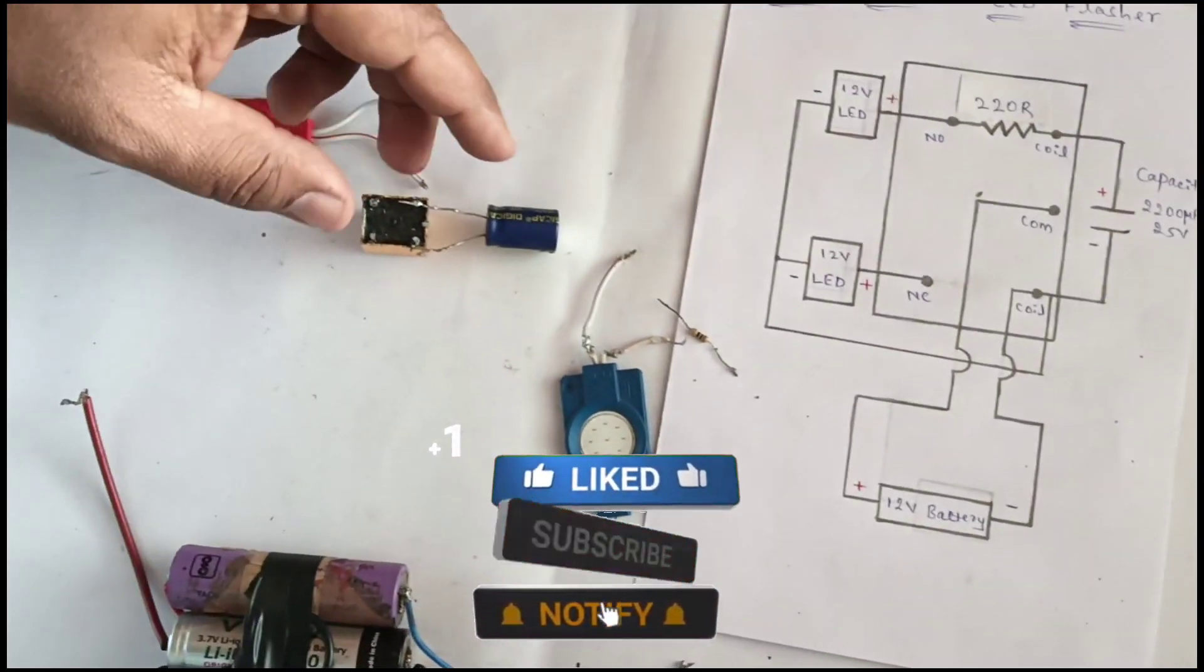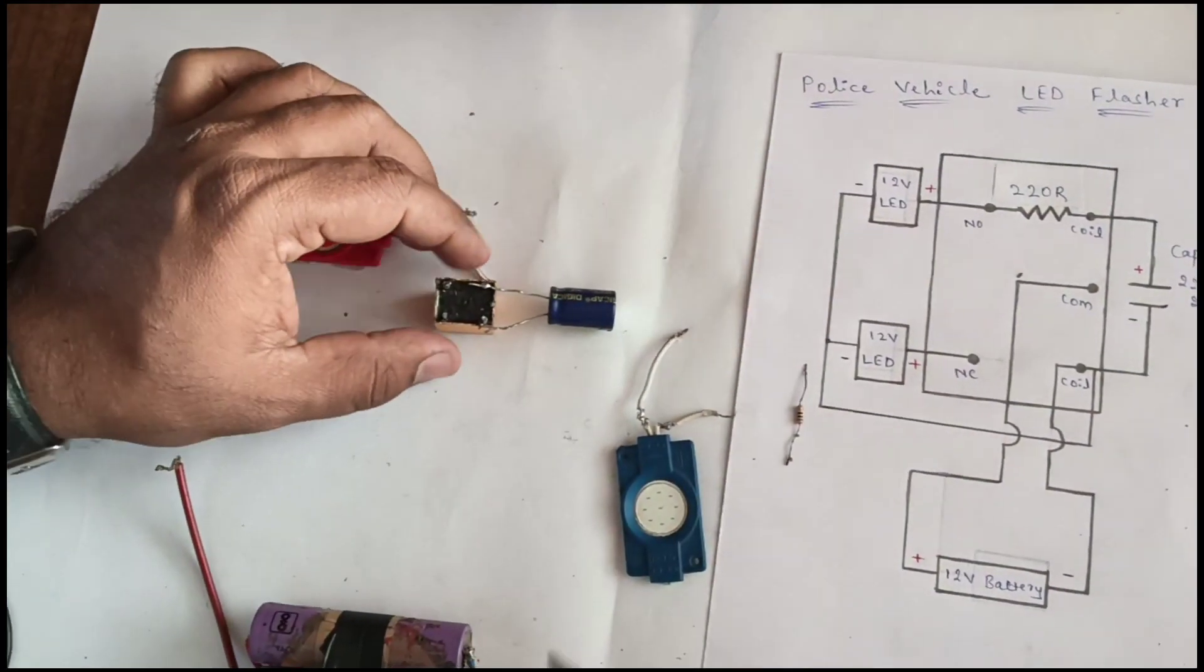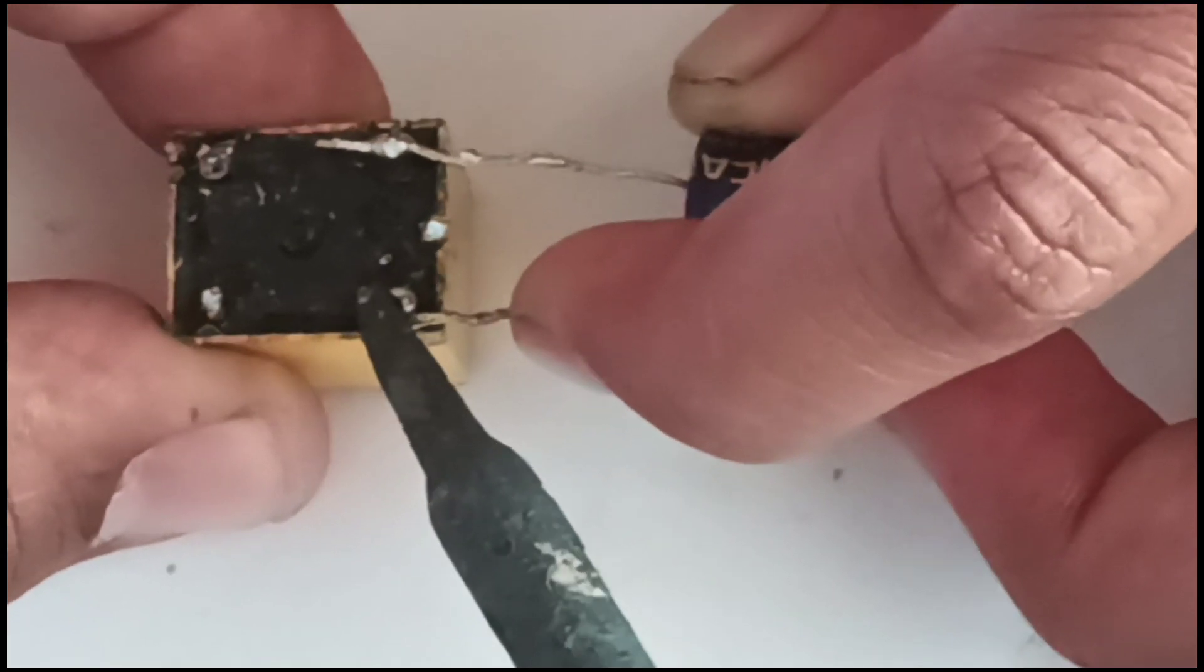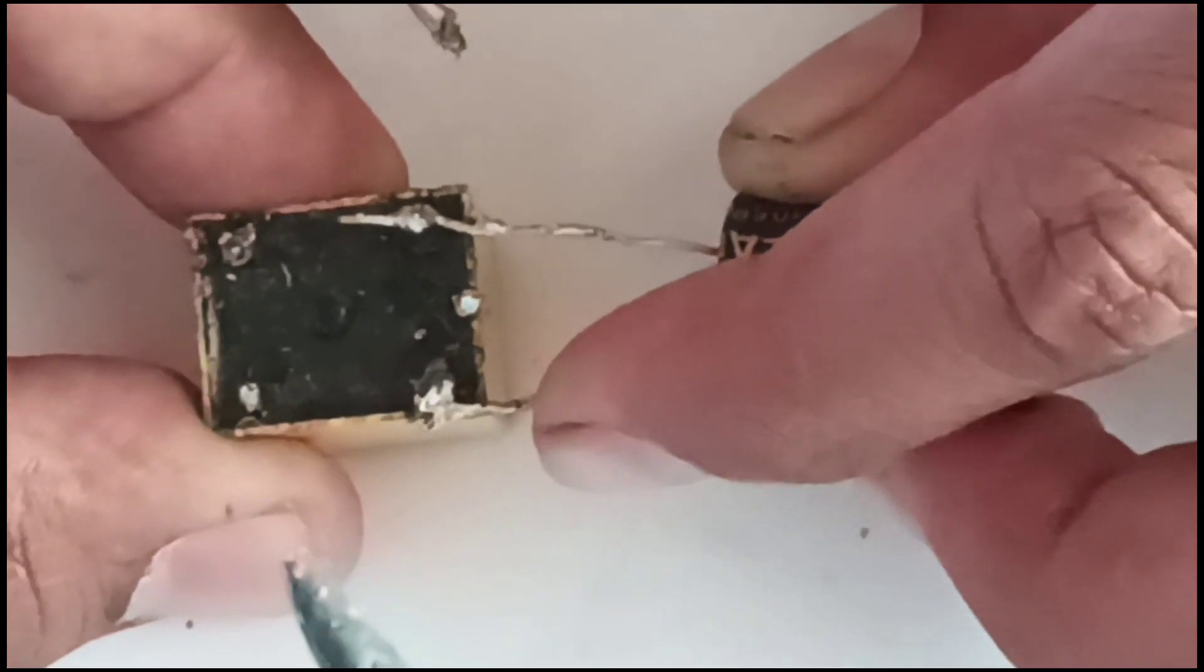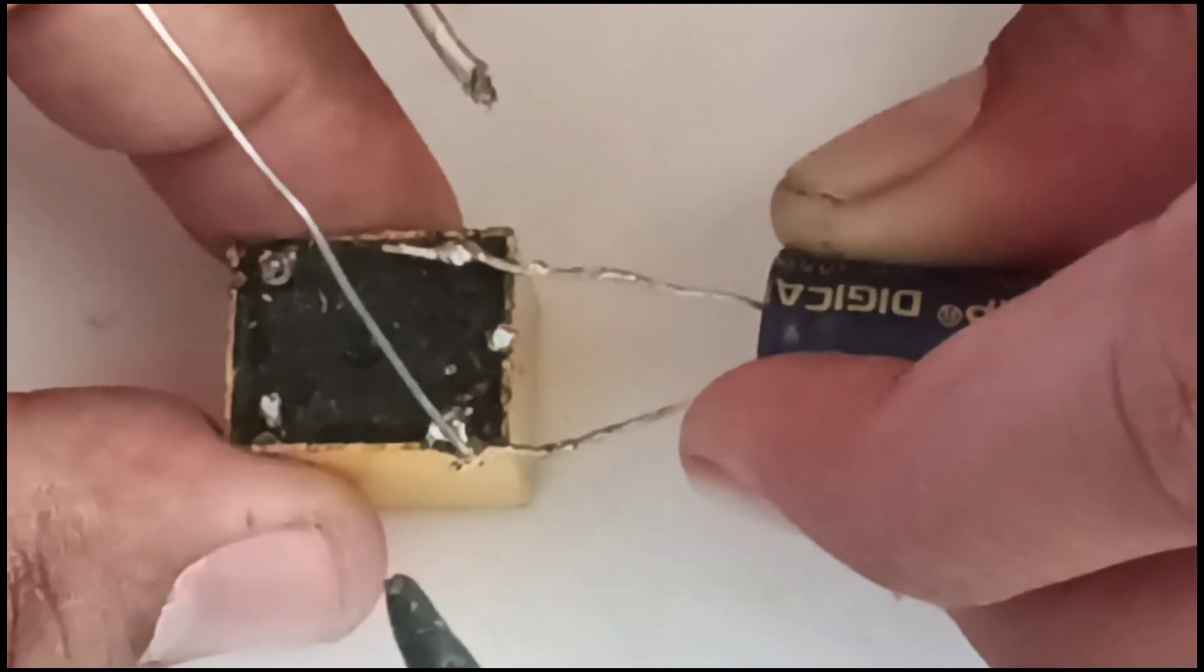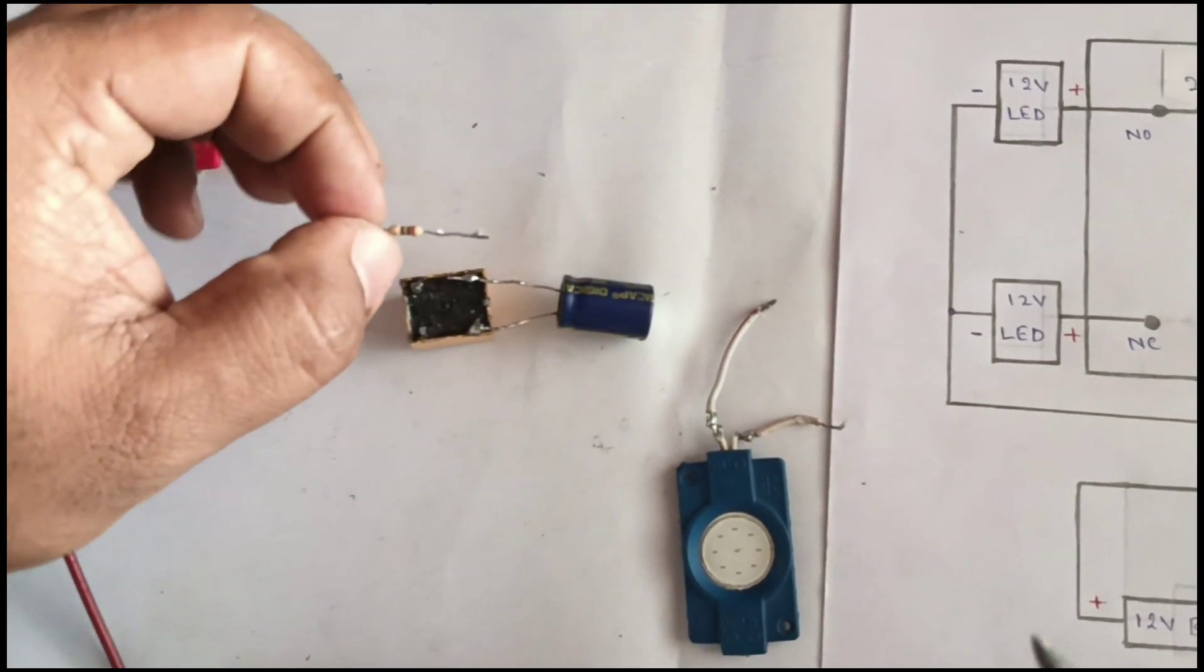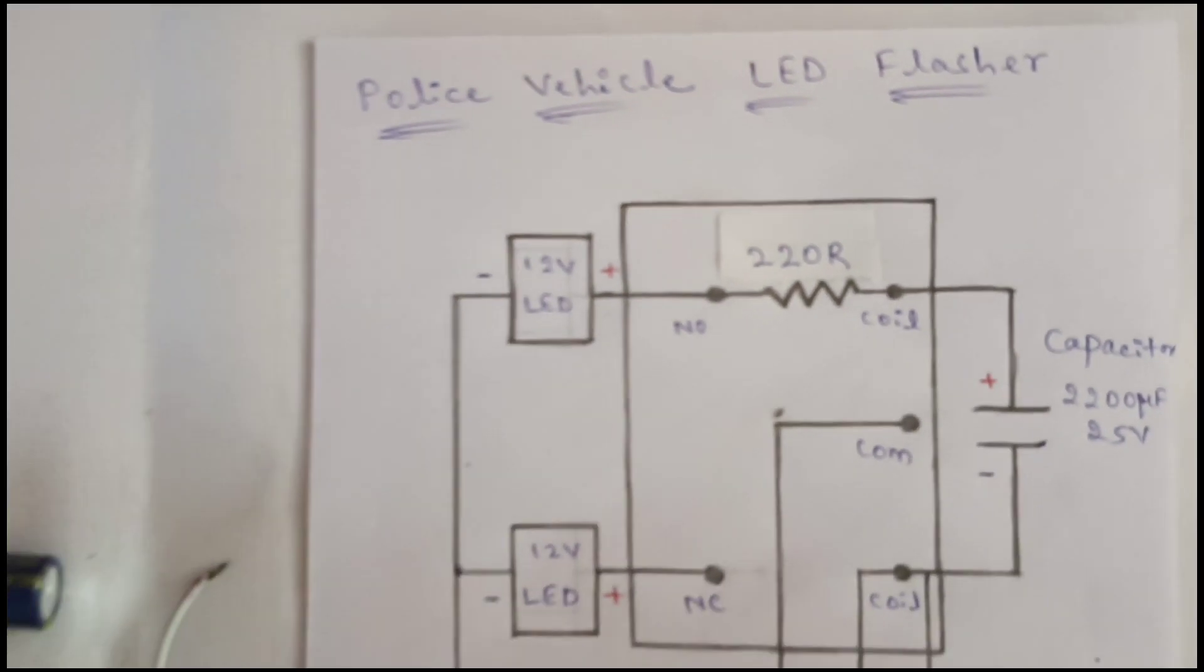This is the negative, connected to the coil. Coil is a negative connected to the coil point at the top 12V relay. Take 220 ohm resistor, connected to NO and coil.